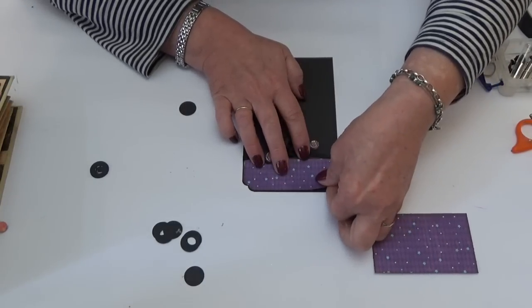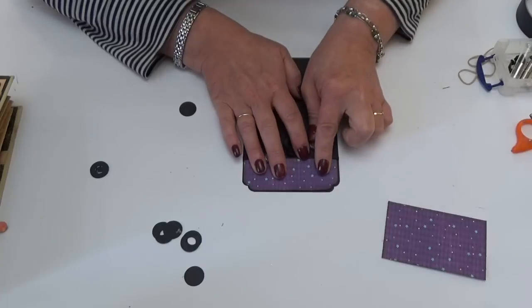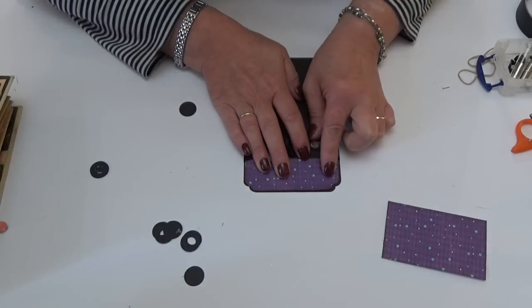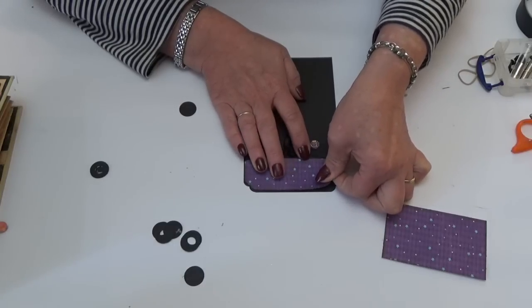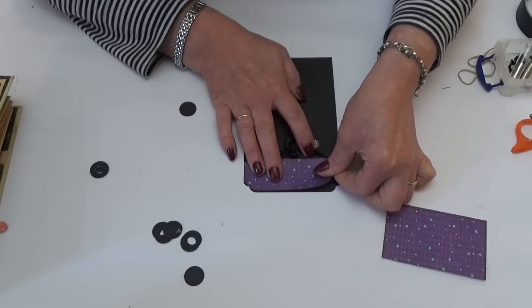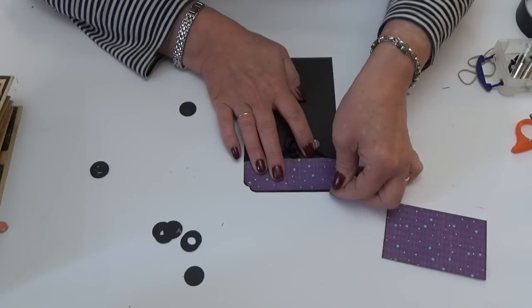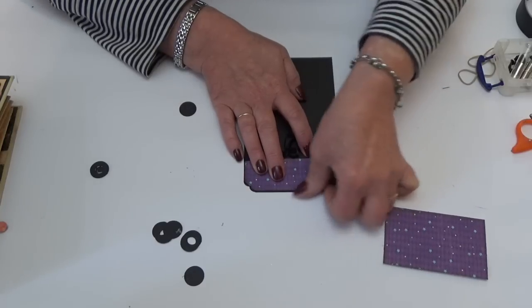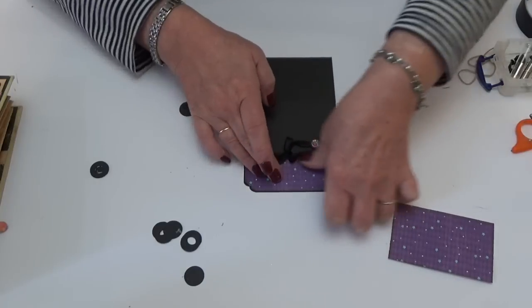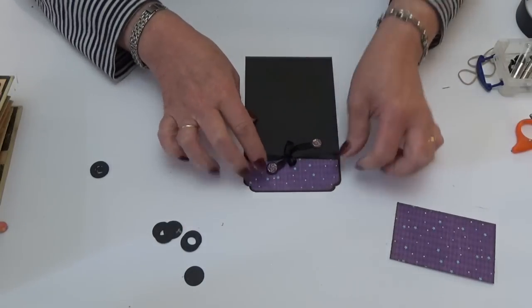So I'm just going to stick that in place and line it up. I've already put a ribbon around the top of my little pocket and added the doodads on the end.